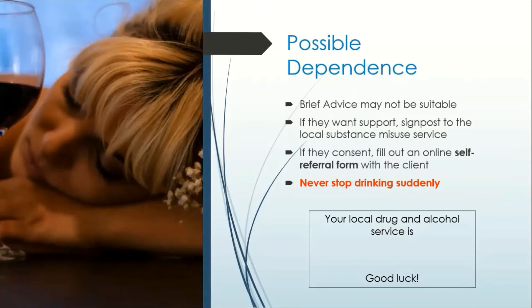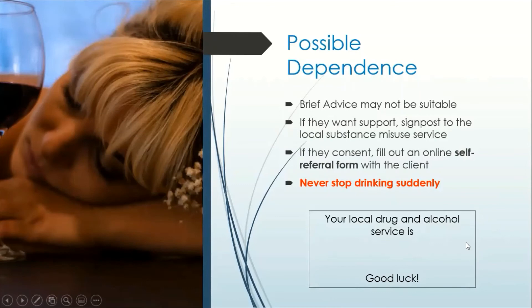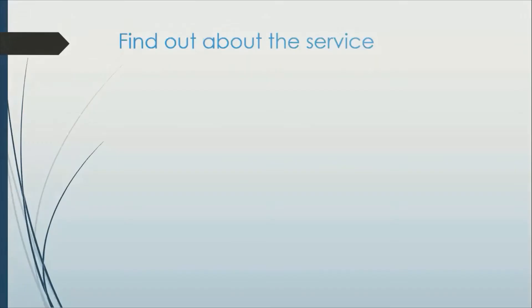Sometimes patients don't want to be referred to a substance misuse service but want advice on how to cut down on their alcohol use — they might be trying to do this on their own. In these cases, I tailor my advice, making sure that they know not to stop drinking suddenly, and recommending things like keeping an alcohol consumption diary so they can know accurately how much they are drinking every week, encouraging them to get support from their GP, and giving them practical help with gradually cutting down. I often provide clients with a little takeaway card that gives them the phone number and name of the local drug and alcohol service so that if they want to self-refer in the future, they have a reminder in their wallet.